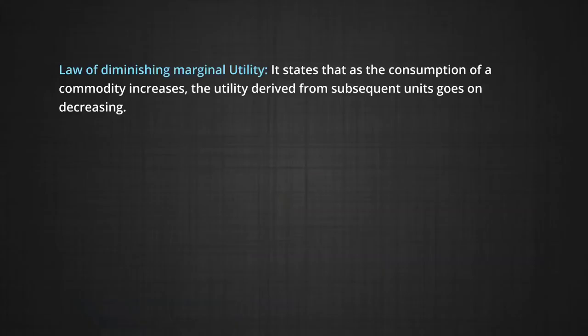Marginal utility is the addition to total utility for each unit increase in consumption. The law of diminishing marginal utility states that as the consumption of a commodity increases, the utility derived from each subsequent unit goes on decreasing.